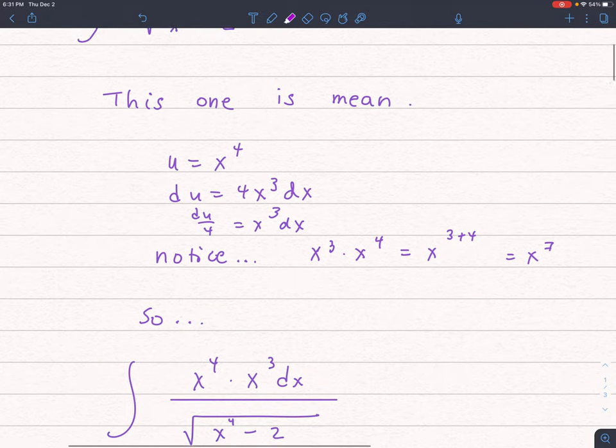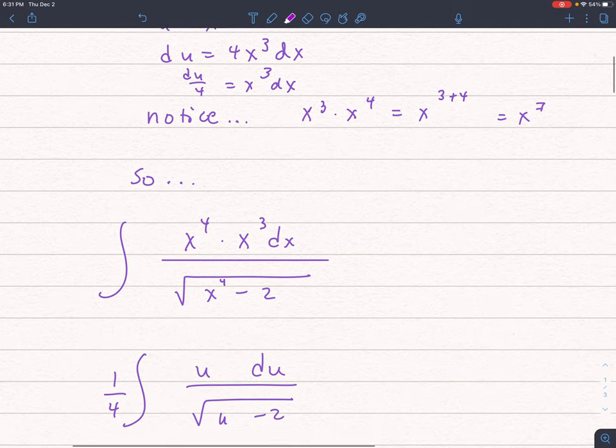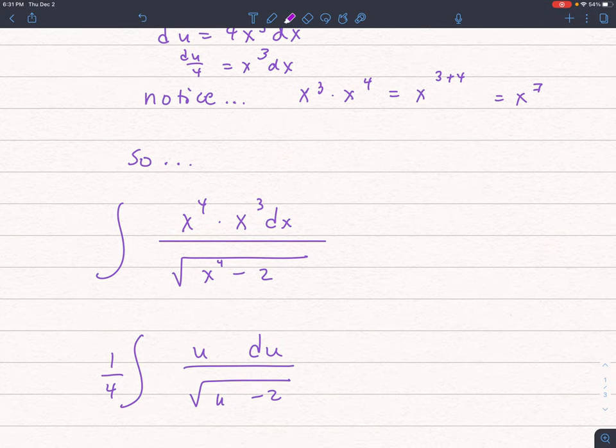So I'll divide both sides by 4, and when I rethink this problem like this, then there is my u-substitution. 1/4th times the integral u du divided by u minus 2, but all of that to the square root.